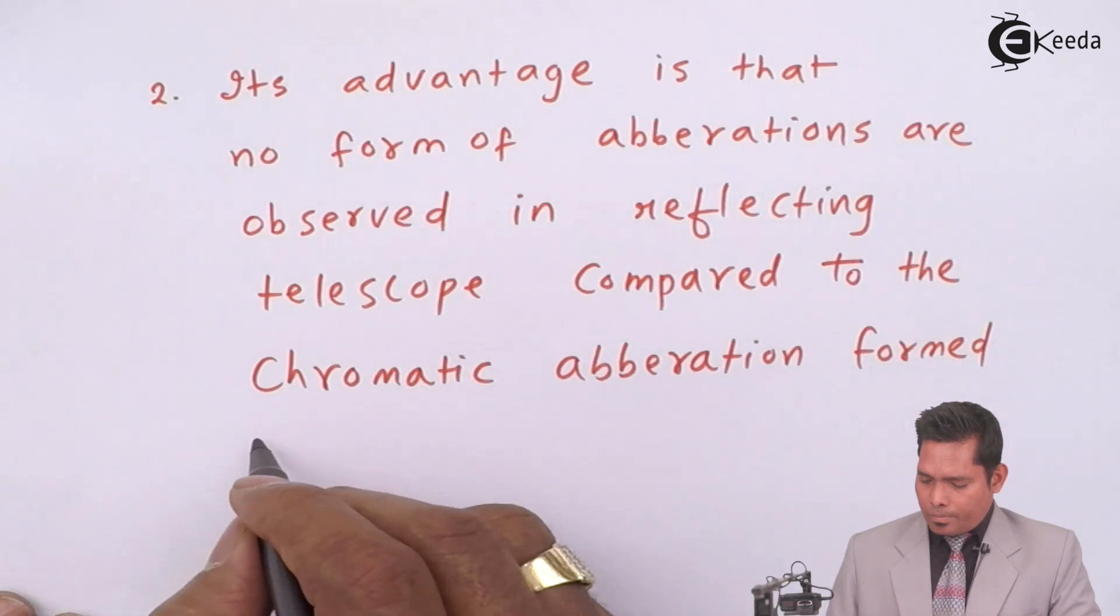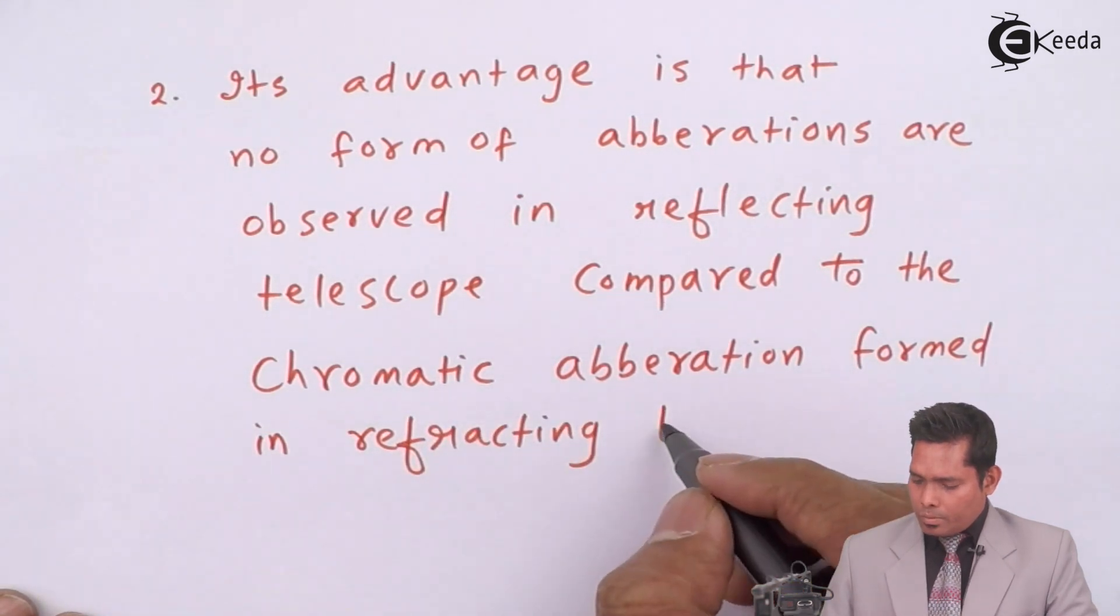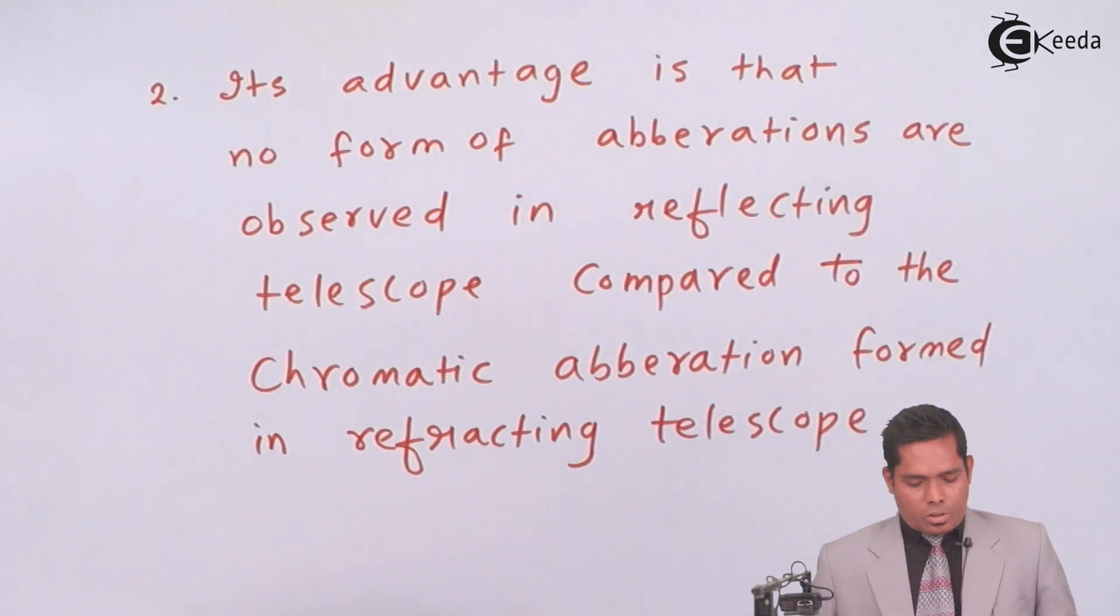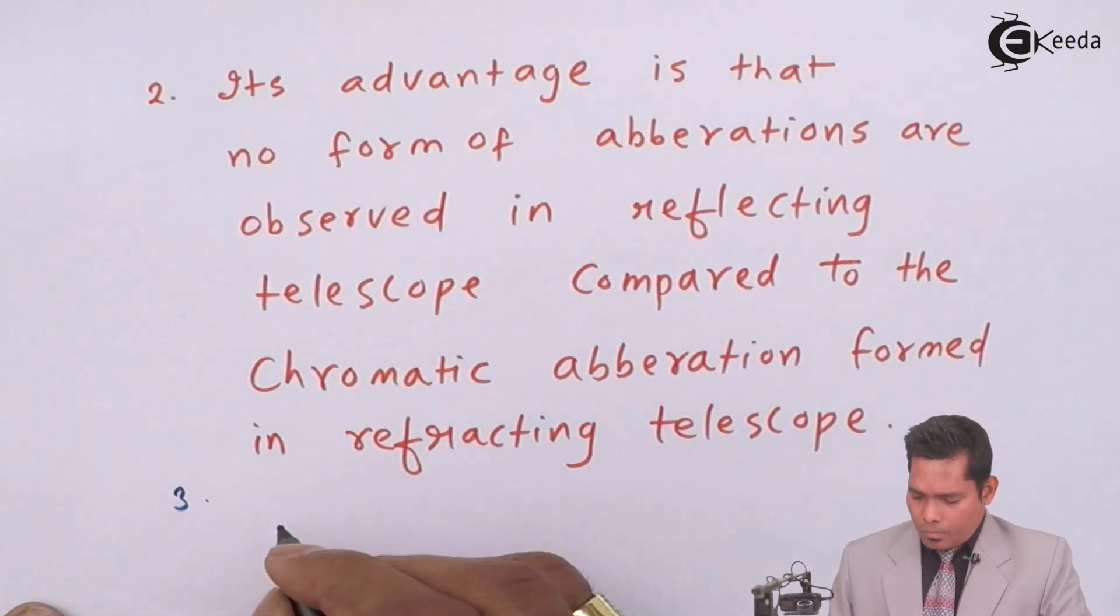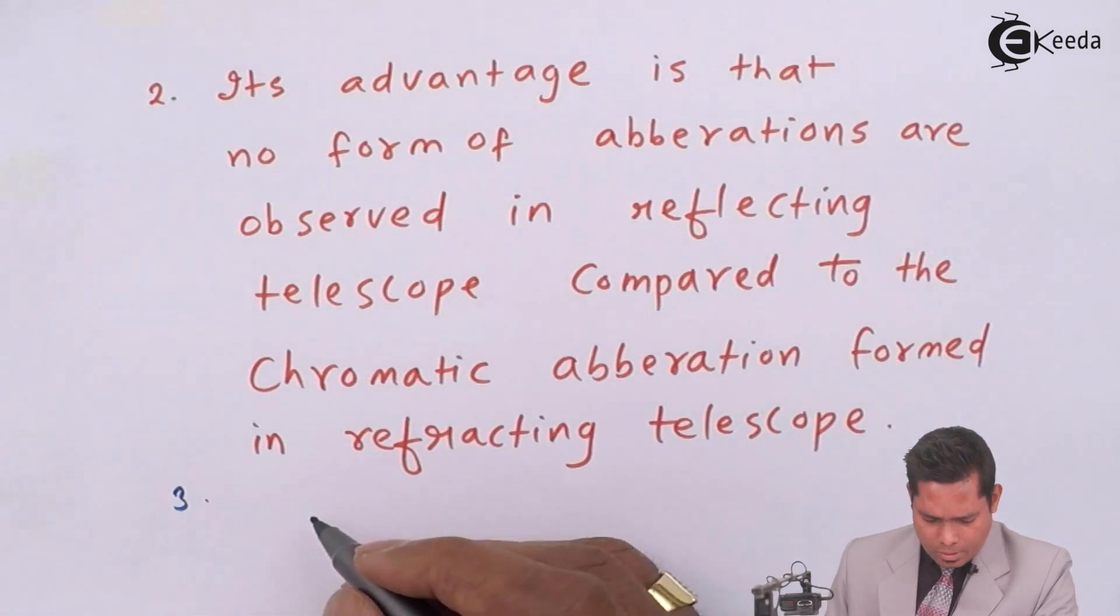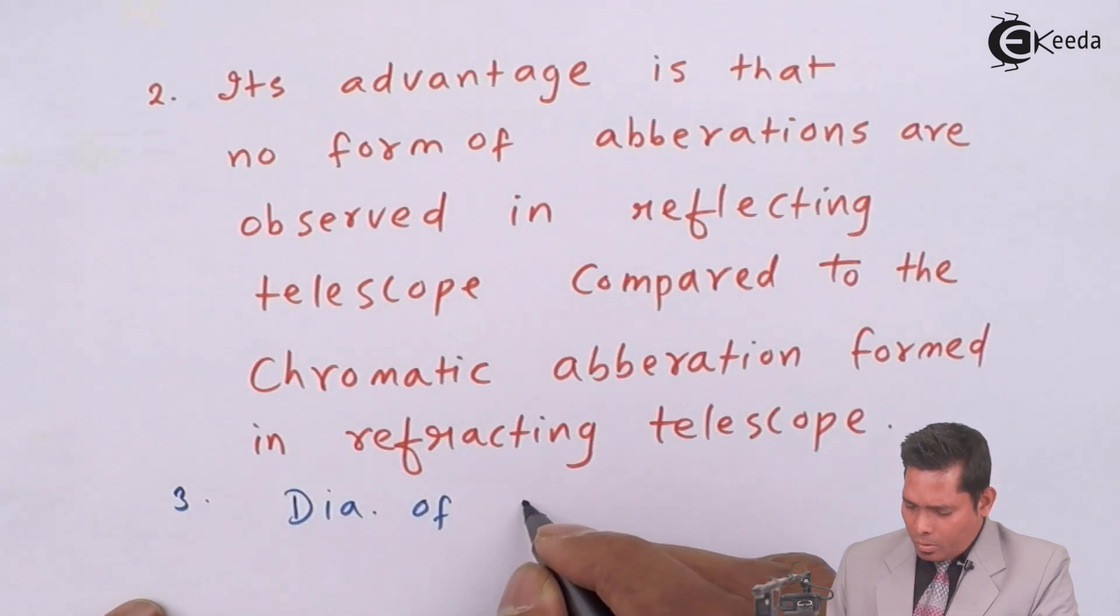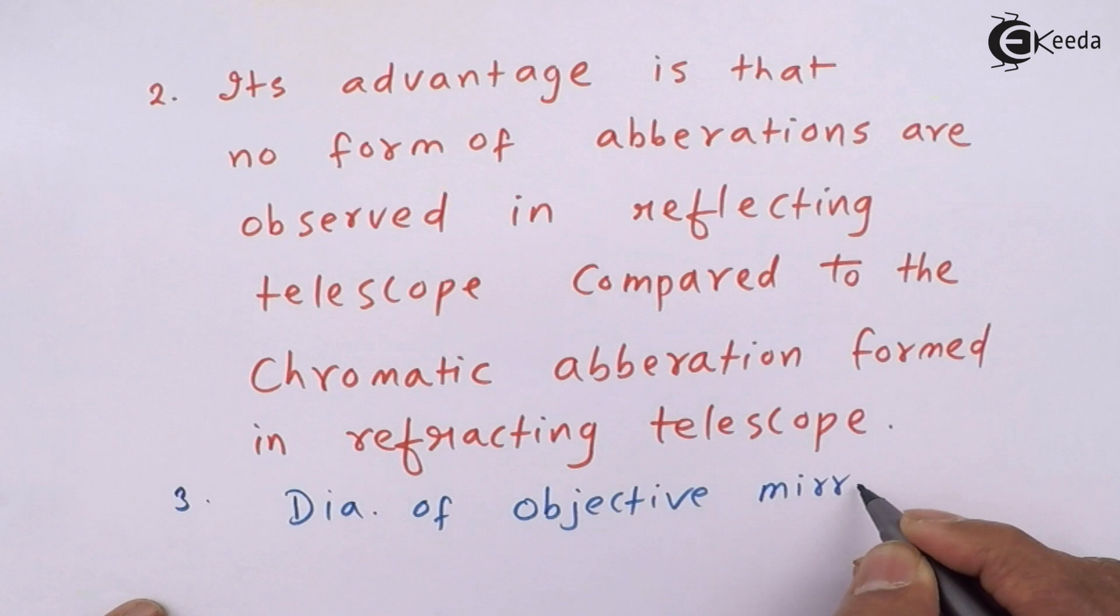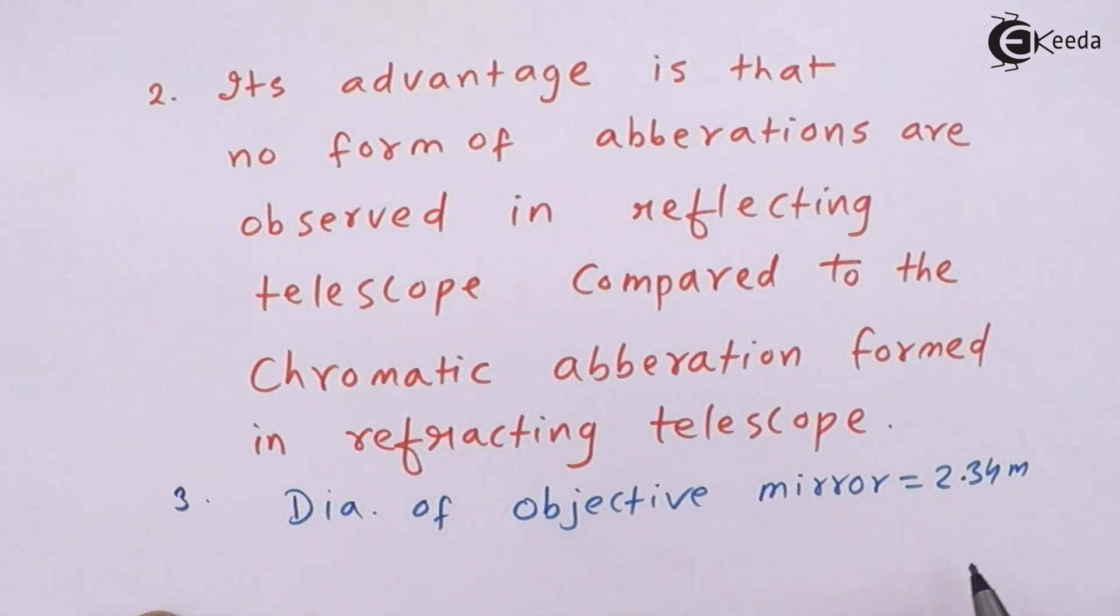And in India, you will find in Tamil Nadu the reflecting telescope with an objective mirror diameter of 2.34 meters.